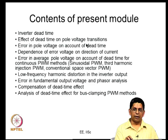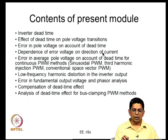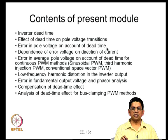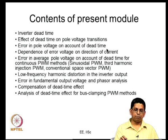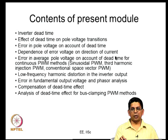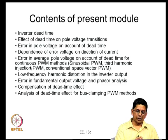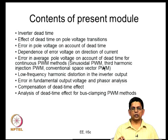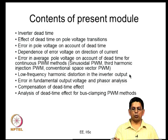Not all transitions change - some transitions from low to high are delayed by td, while high to low transitions do not change. This is related to the direction of current. We saw in the previous lecture how pole voltage transitions are delayed by dead time td, and we looked at what the error voltage is. For positive current the error is negative, and vice versa.